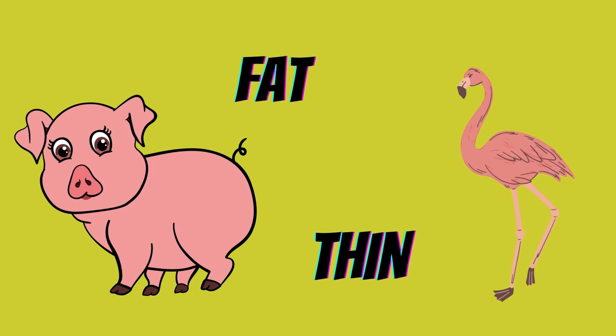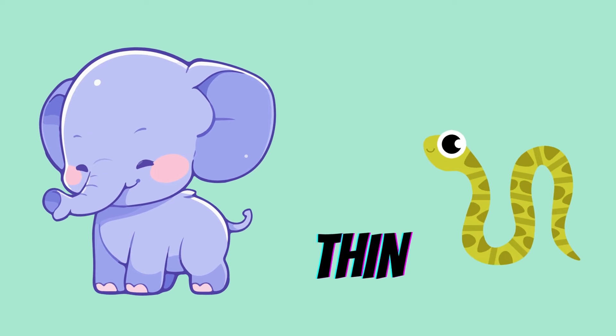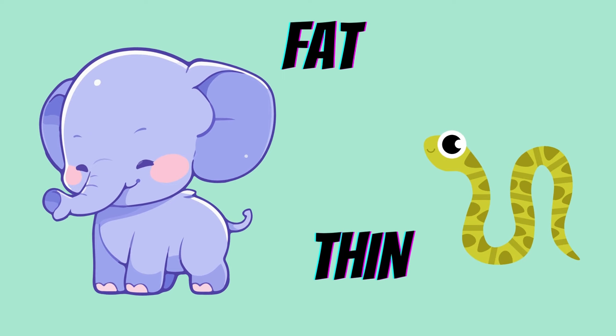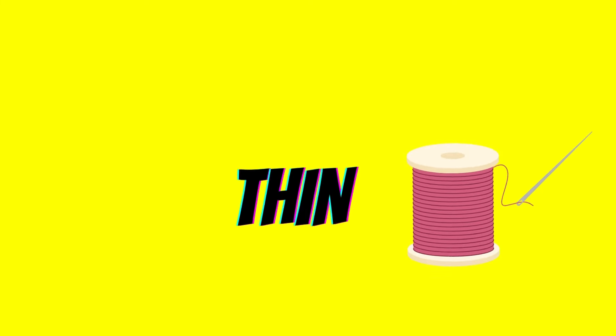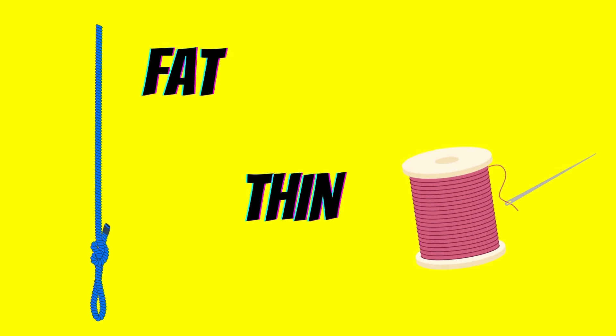Pig is fat but flamingo is thin. Elephant is fat but snake is thin. Rope is fat but thread is thin.